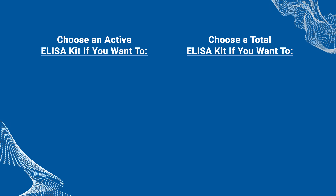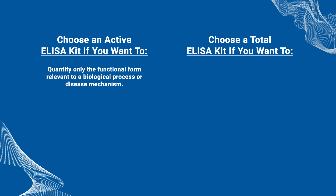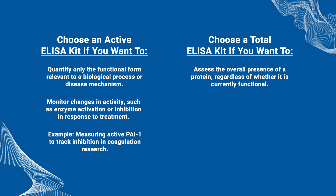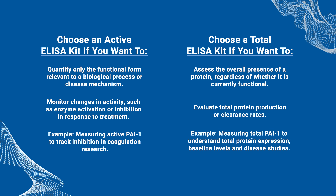Let's break down when to use each option. Choose an active ELISA kit if you want to quantify only the functional form relevant to a biological process or disease mechanism, or to monitor changes in activity such as enzyme activation or inhibition in response to treatment — for example, measuring active PAI-1 to track inhibition in coagulation research. Choose a total antigen ELISA kit if you want to assess the overall presence of a protein regardless of whether it is currently functional, or to evaluate total protein production or clearance rates — for example, measuring total PAI-1 to understand total protein expression, baseline levels, and disease studies.